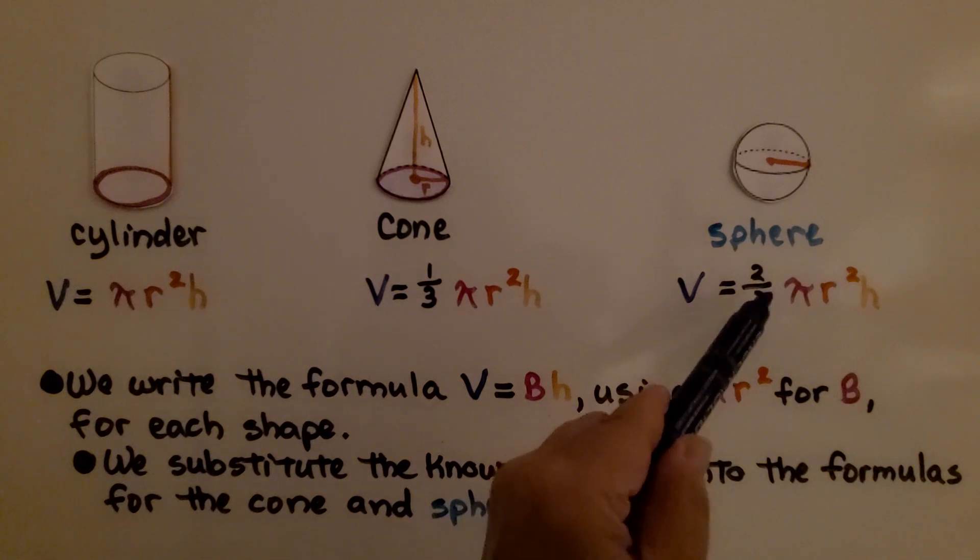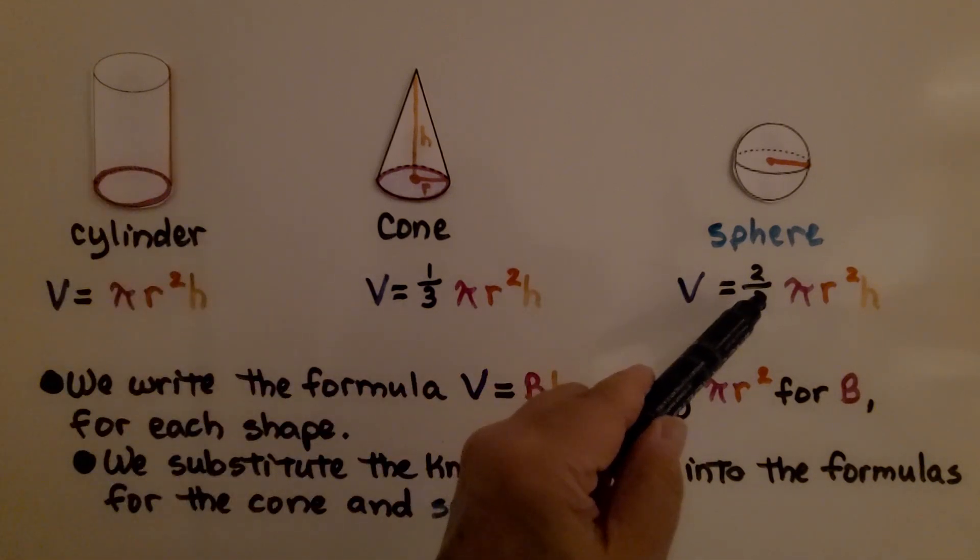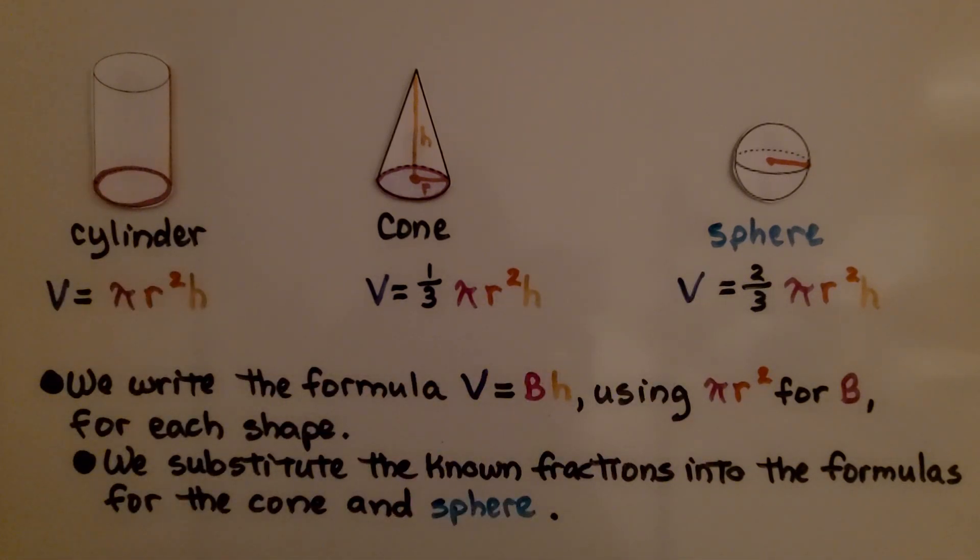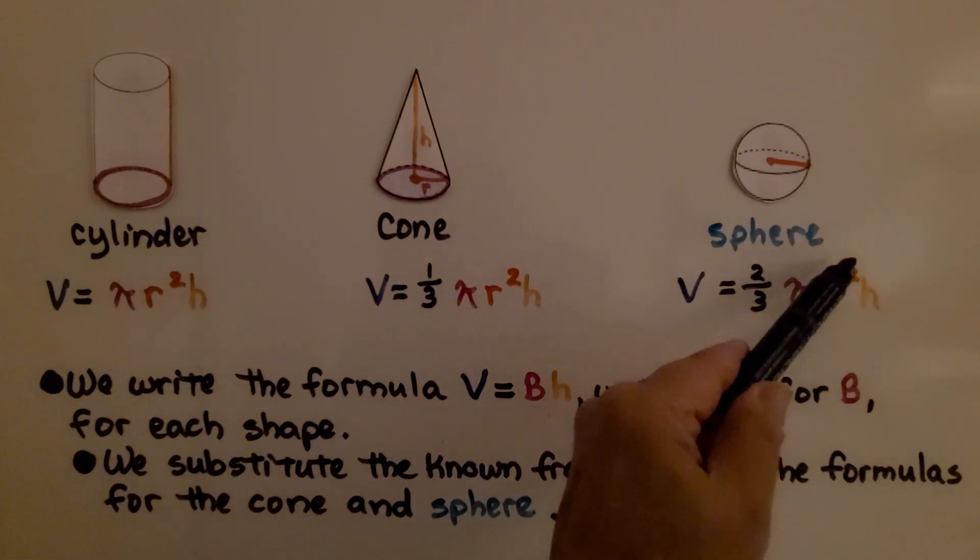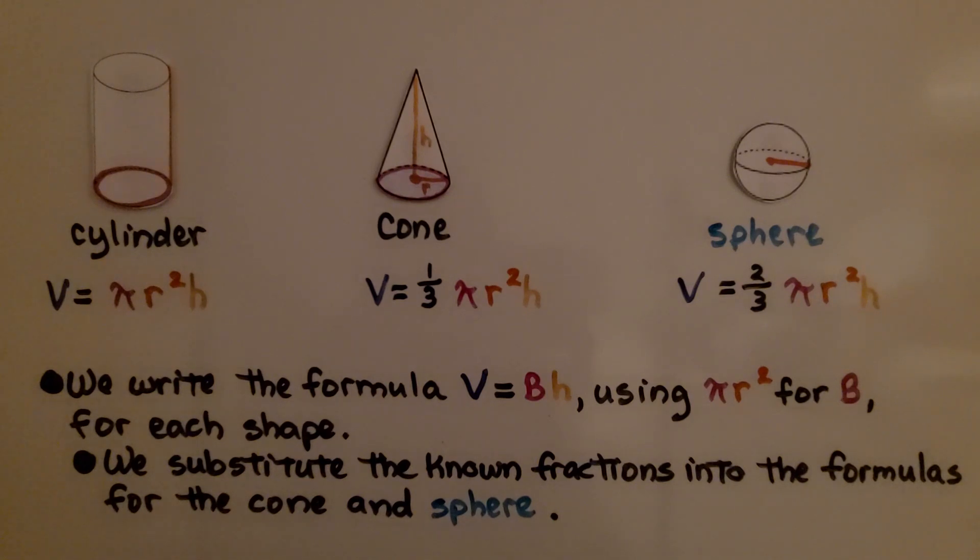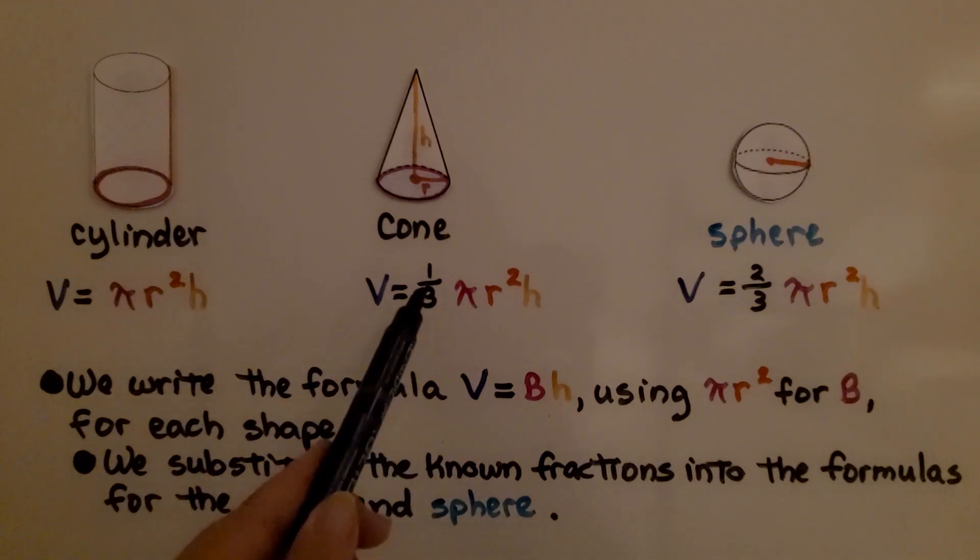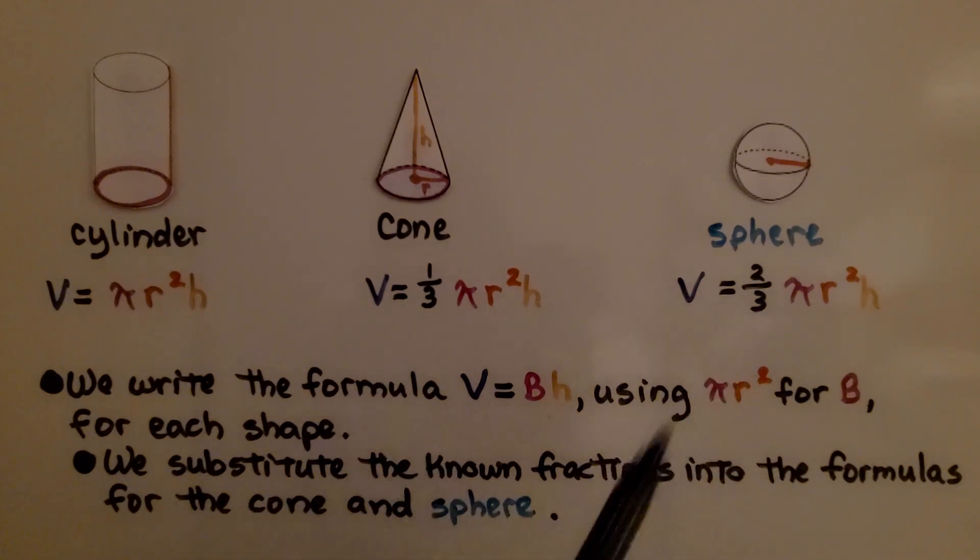Now we found that the sphere fills the cylinder two-thirds of the way. So the formula for the volume of a sphere is V = 2/3 πr²h. We write the formula V = Bh, for volume equals base times height, using πr² for B for each shape. We substitute the known fractions into the formula for the cone and sphere. So we substitute in the one-third or the two-thirds.